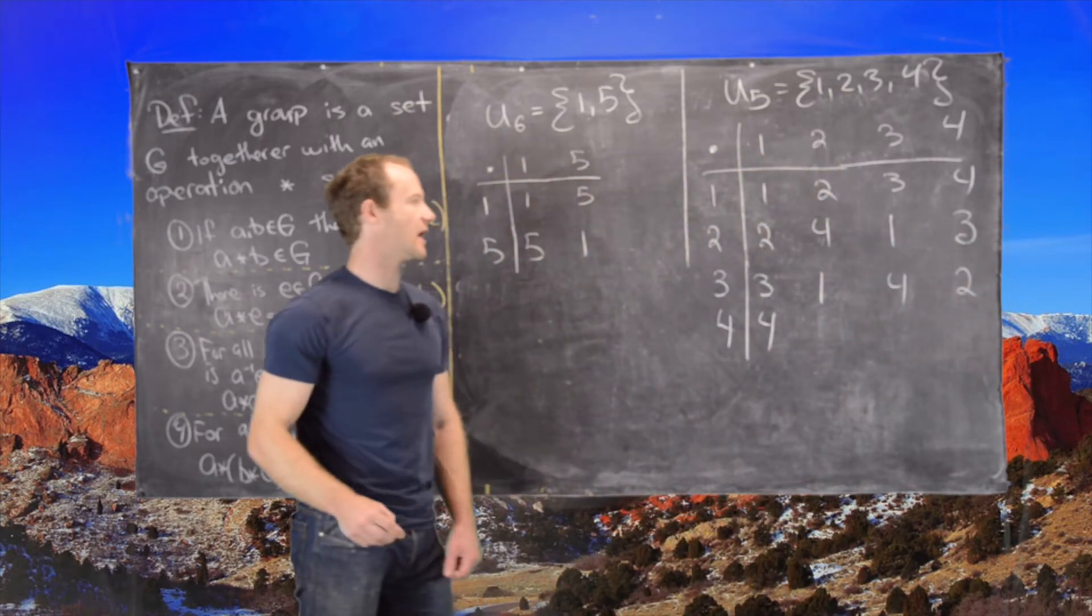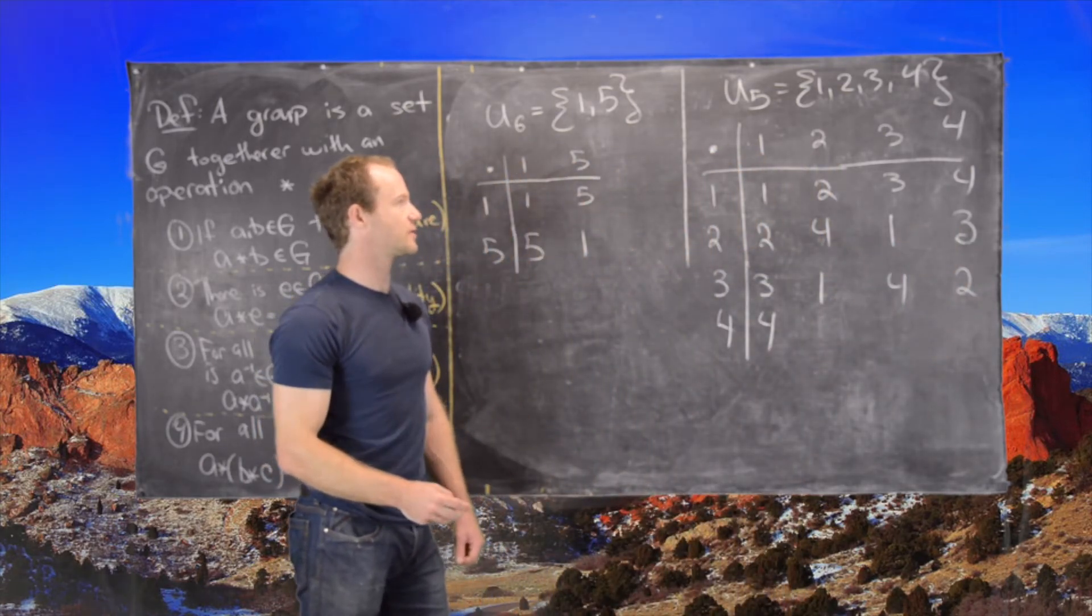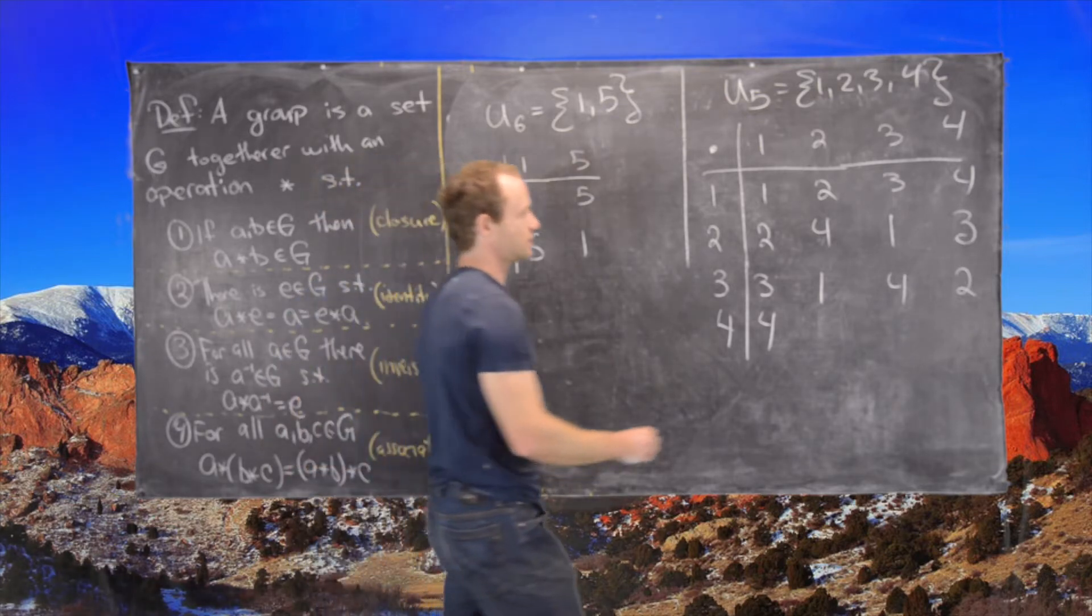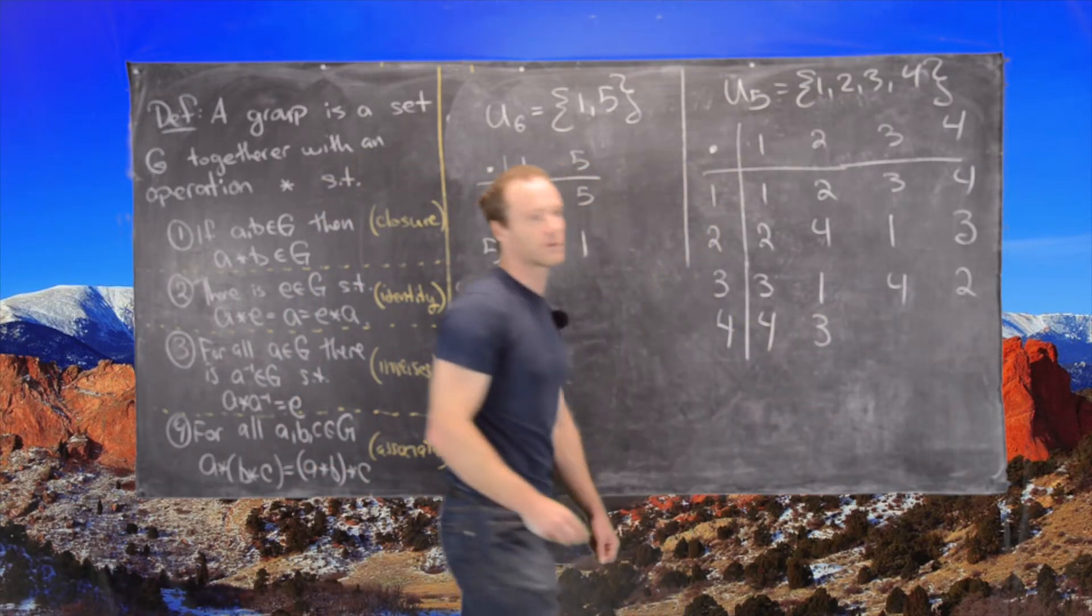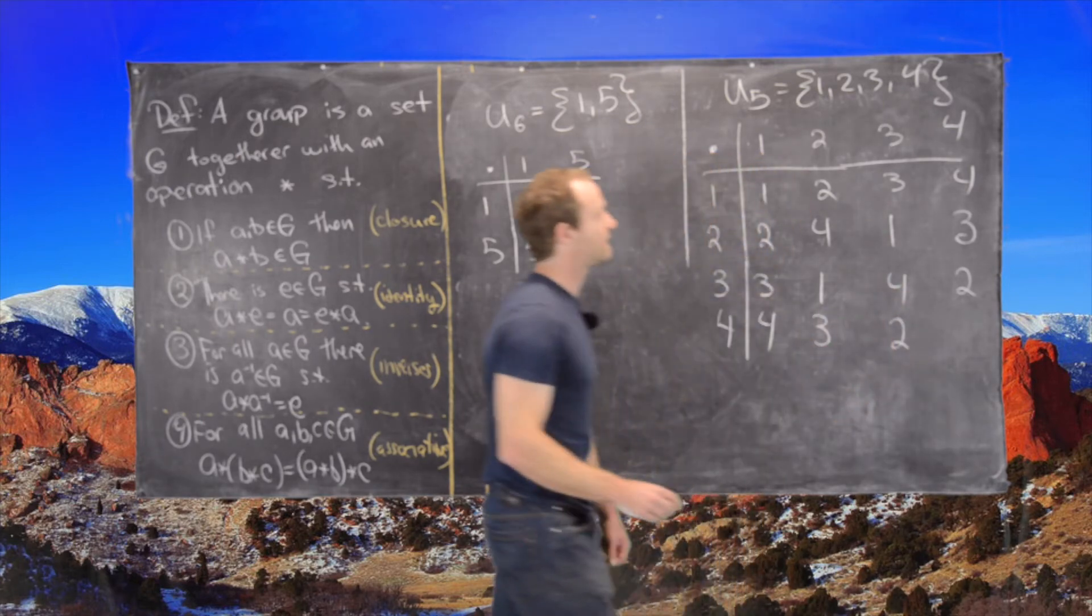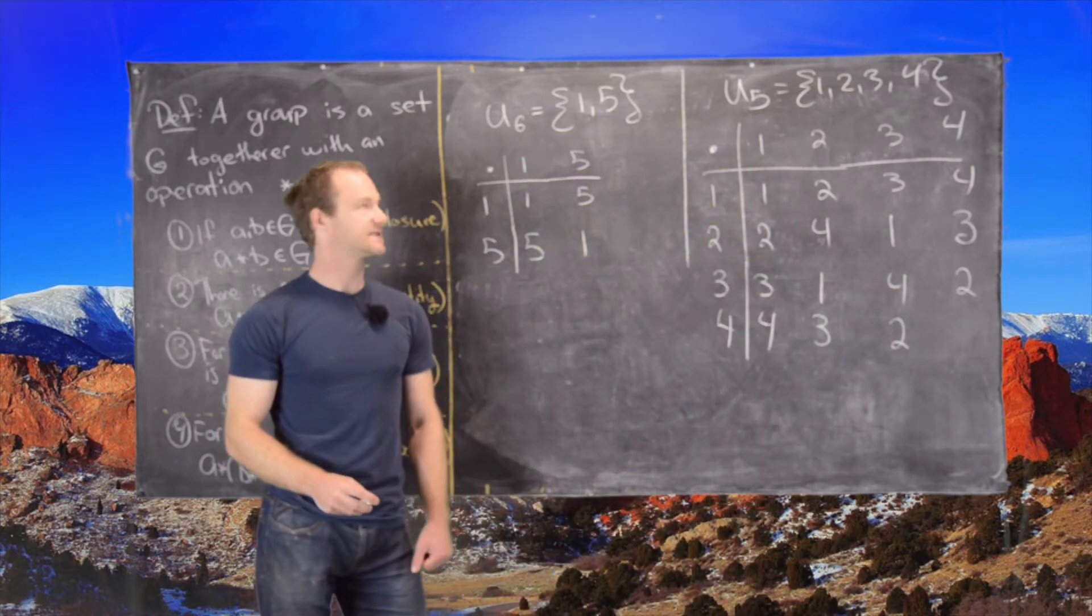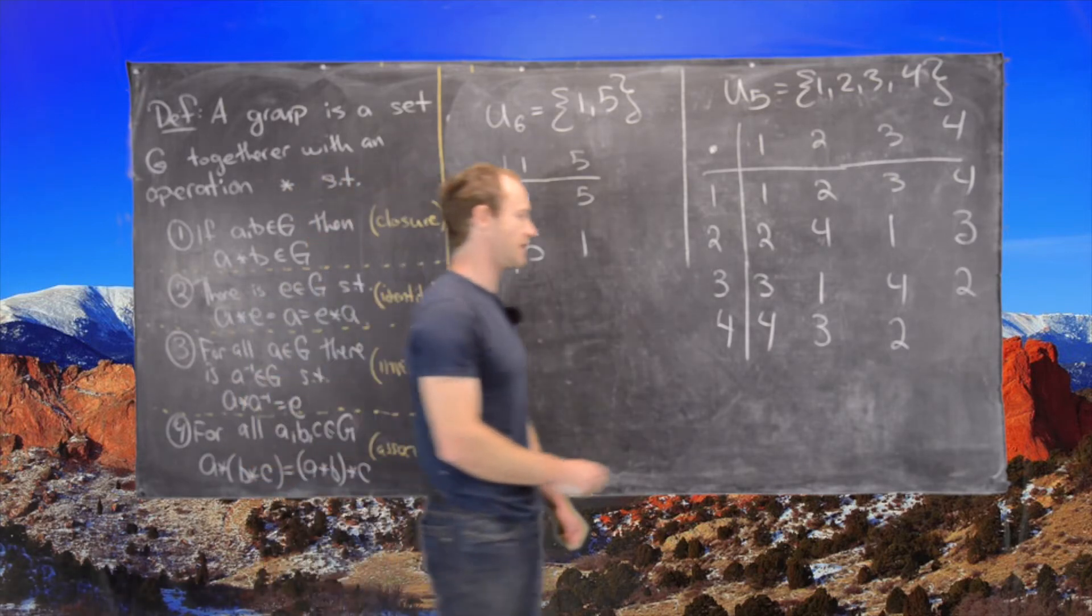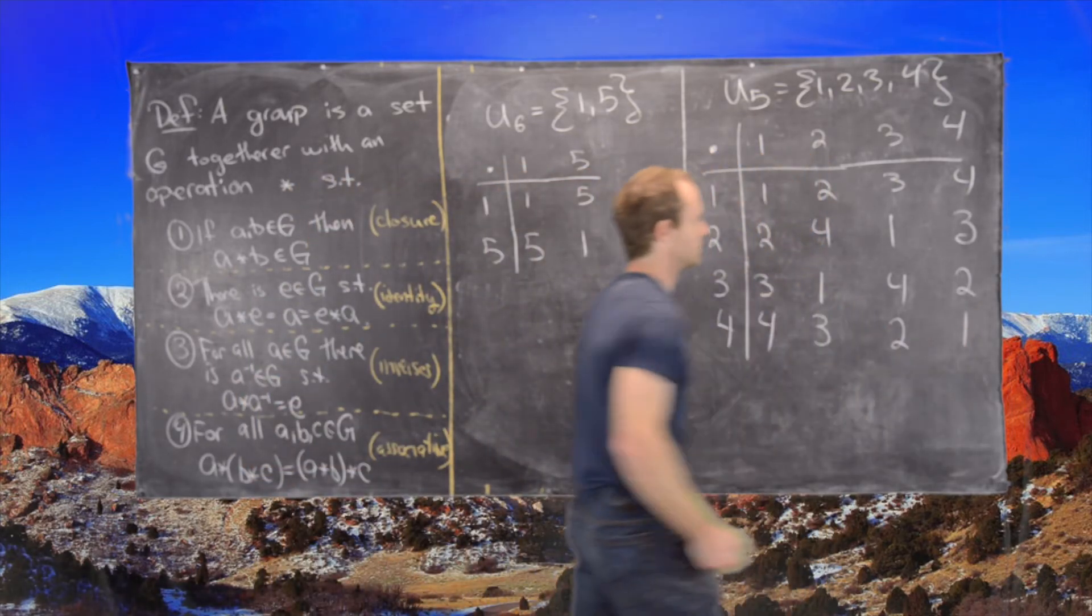Now we can fill in the rest. 4 times 2 is 8 which is 3, 4 times 3 is 12 which is 2, and finally 4 times 4 is 16, which is 15 plus 1, or 1 mod 5.